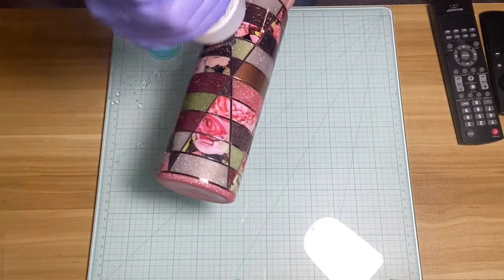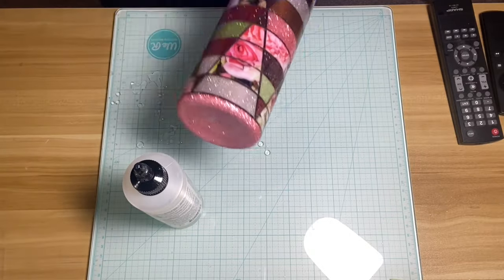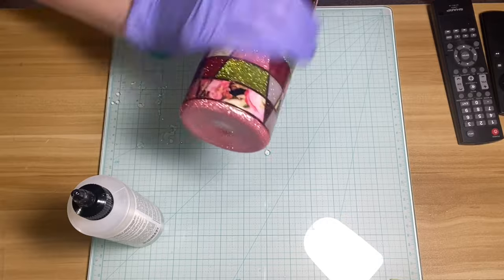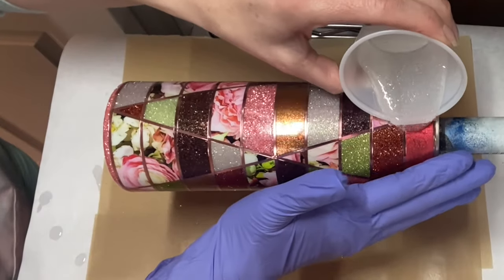Now that all the vinyl strips are laid down where I want them, I put one more very thin layer of quick coat over the top of it, let it dry, and then it's time to apply your next layer of epoxy.